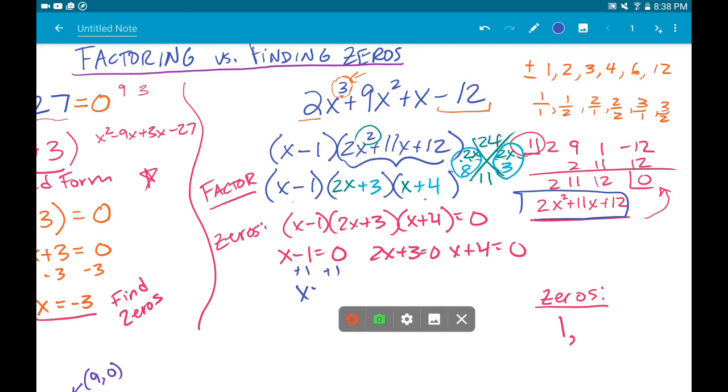Add 1. I get x equals 1. That's the one I had down here. Subtract 3 and divide by 2. I get negative 3 halves. That kind of popped up up here. Negative 3 halves. And then the last one, it looks like, would be negative 4.